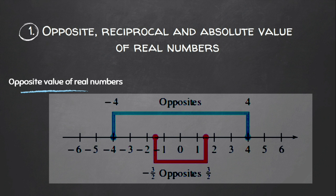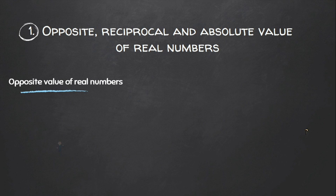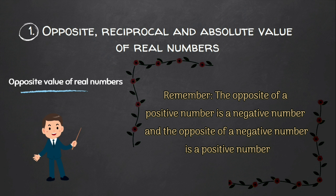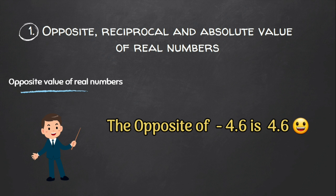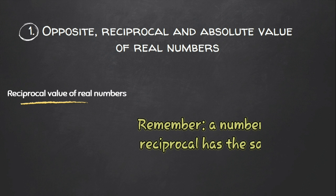Similarly, minus three over two and three over two are also opposites of each other. To find the opposite of a number, we simply change the sign of that number. For example, the opposite of minus four point six is four point six. To get the reciprocal value of a real number, we simply divide one by that number.